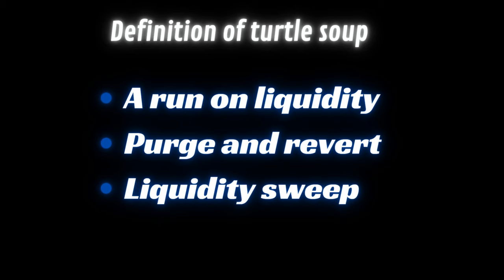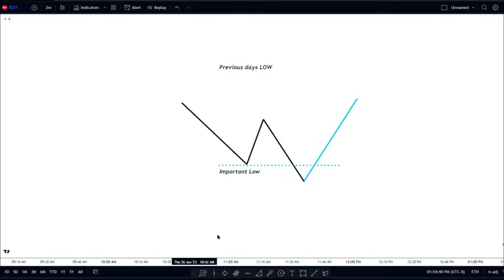The basic definition of turtle soup is that it's a run on liquidity — also called a purge and revert. Once the run on liquidity is completed, it has purged the liquidity and then reverts. Another term people use is a liquidity sweep. It's simply running the stops that are above a previous day's high, an important high, equal highs — wherever trader stops are going to be placed.